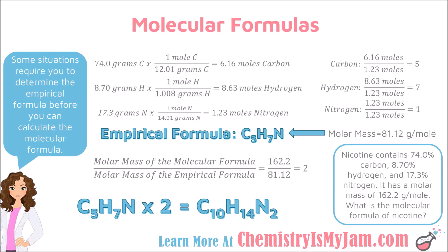We follow the same steps for writing an empirical formula. Step 1: write your percents as grams. Each percentage becomes grams — 74.0 grams of carbon, 8.7 grams of hydrogen, and 17.3 grams of nitrogen. Step 2: convert gram values to moles by dividing by the molar mass from the periodic table, giving 6.16 moles of carbon, 8.63 moles of hydrogen, and 1.23 moles of nitrogen.